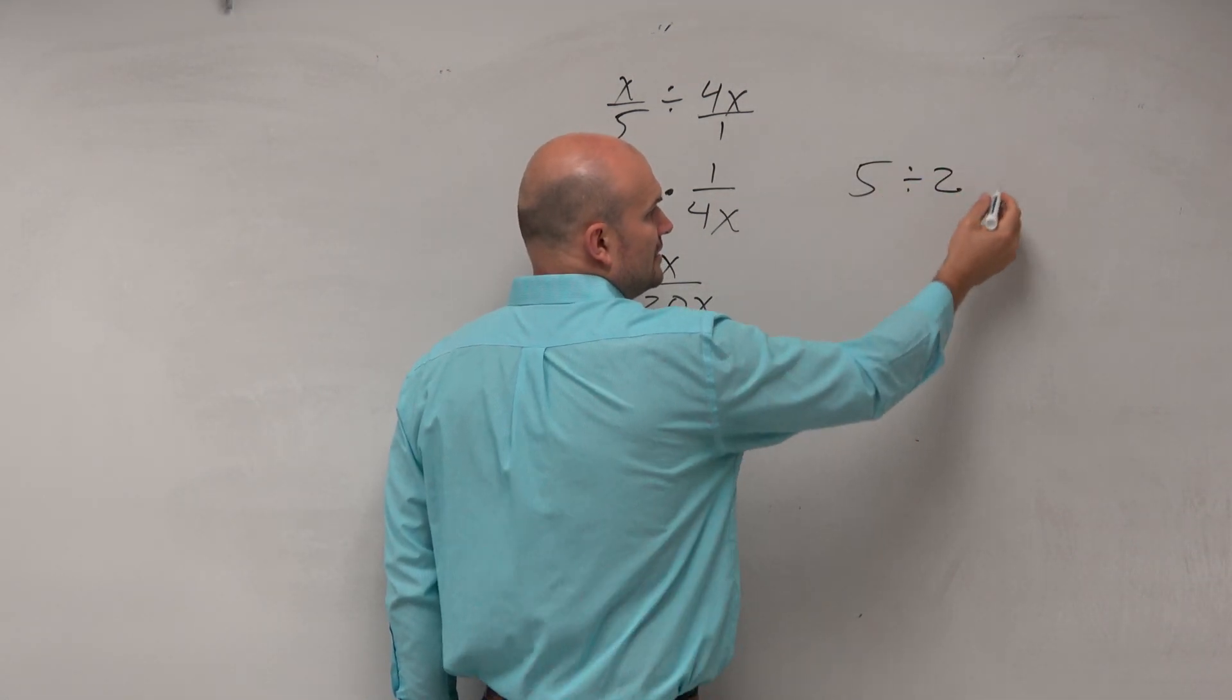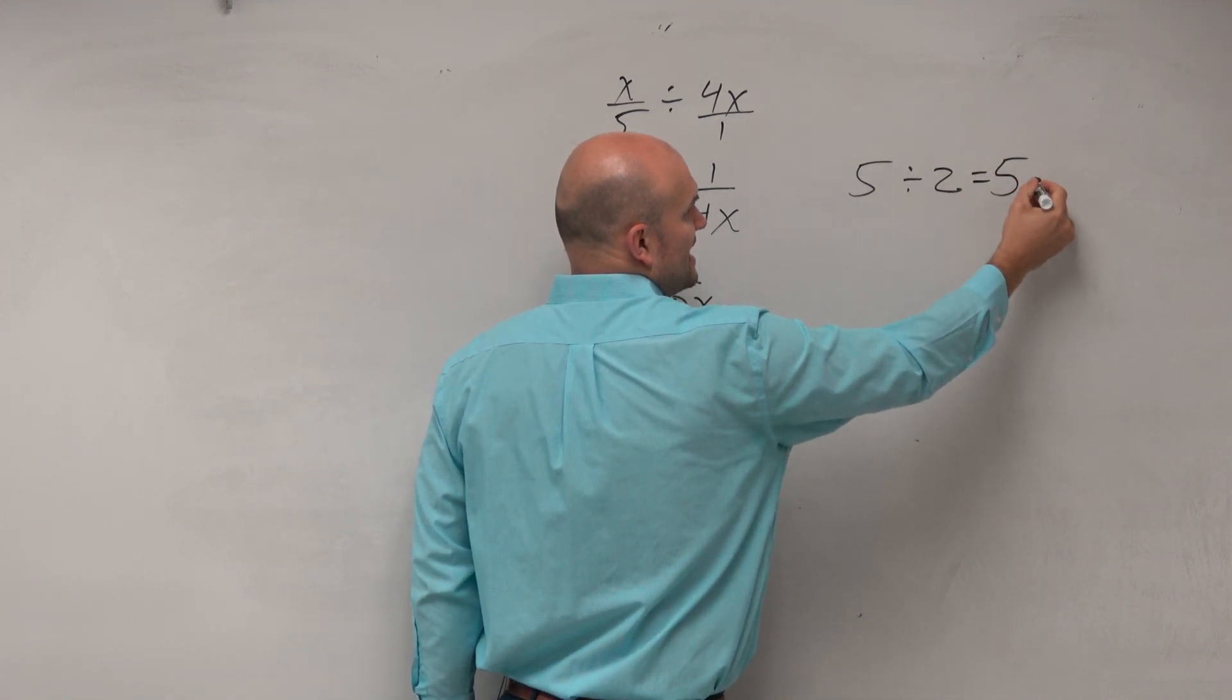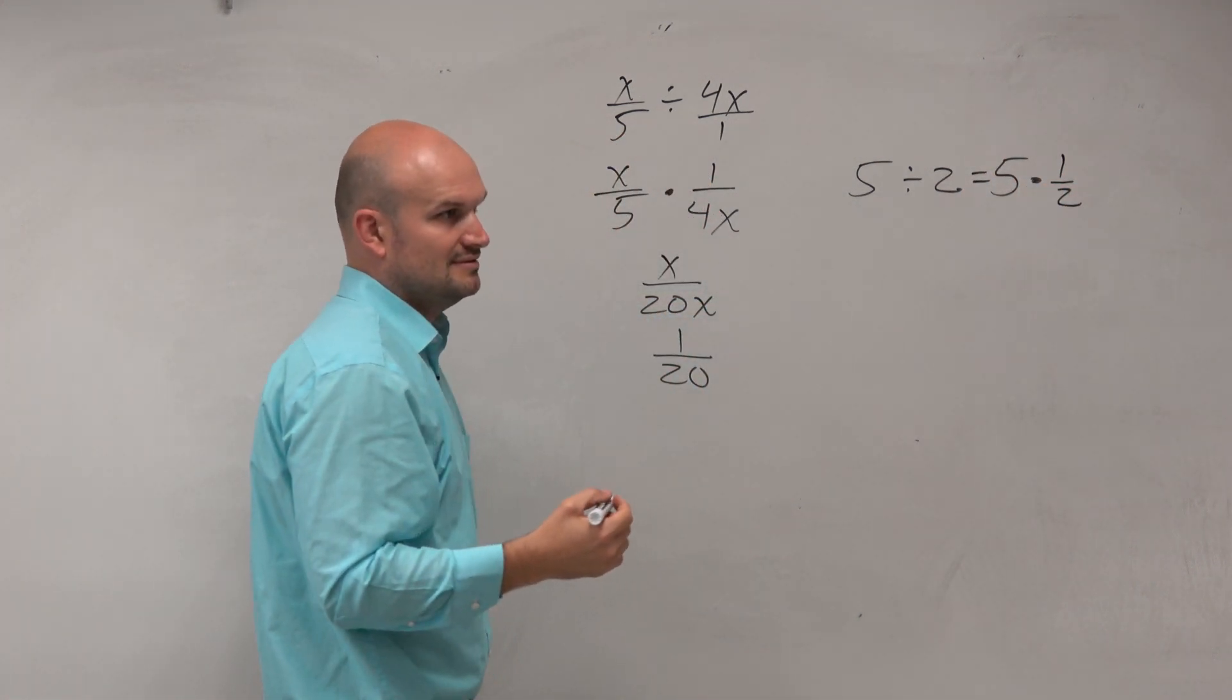5 divided by 2 is the same thing as 5 times 1 half, right?